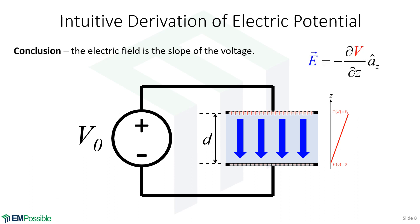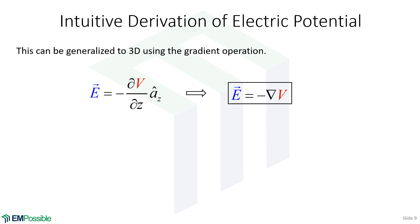This suggests that the electric field is the slope of the electric potential — and that's exactly what happens. We put a negative sign to enforce the sign convention of the electric field going from positive to negative charge, or from high to low potential. We can generalize this scalar equation to three dimensions using the gradient, which is the three-dimensional spatial derivative. We arrived here two ways: rigorously through vector calculus, and qualitatively through the parallel plates picture.